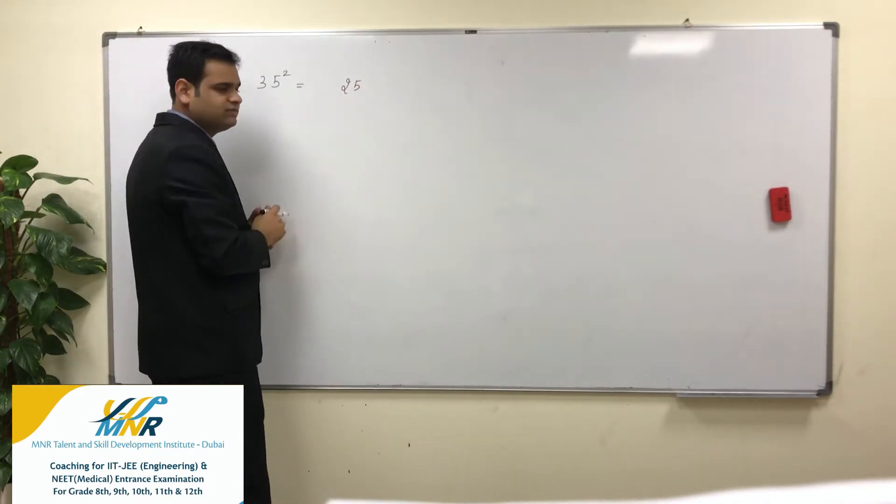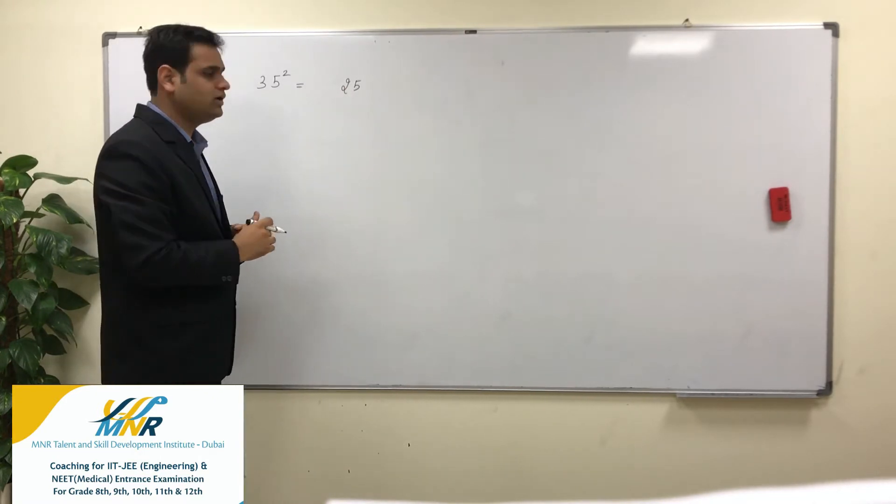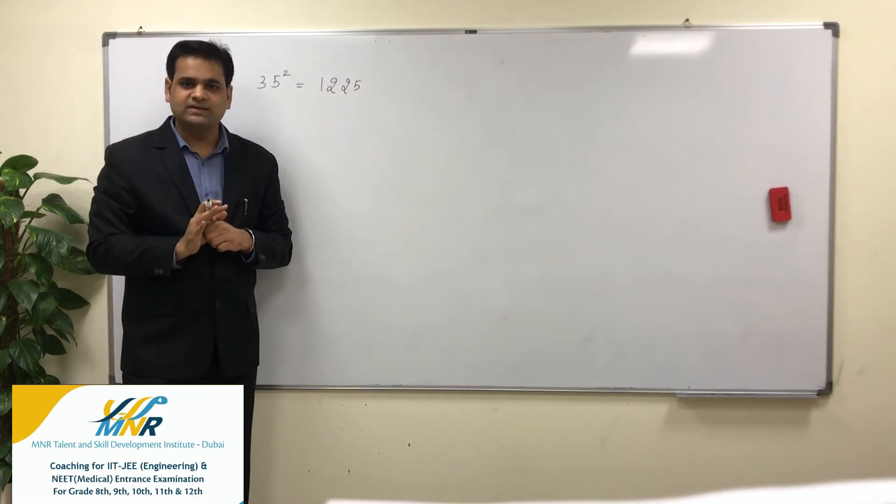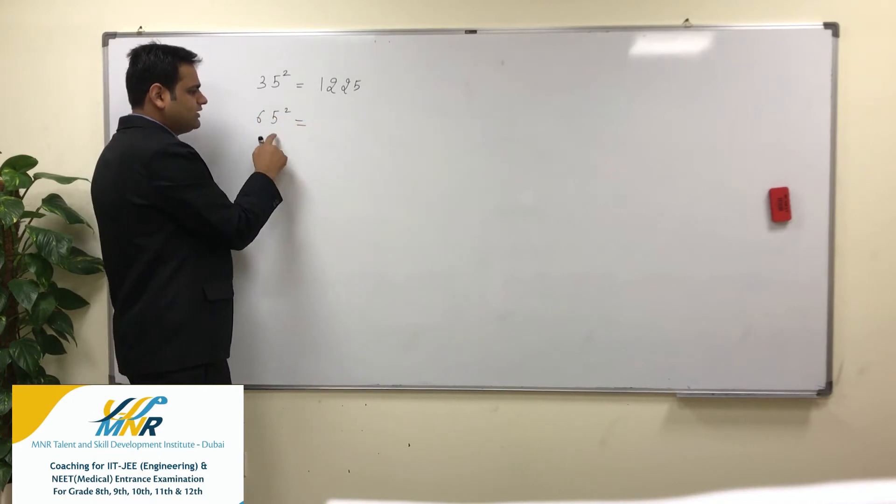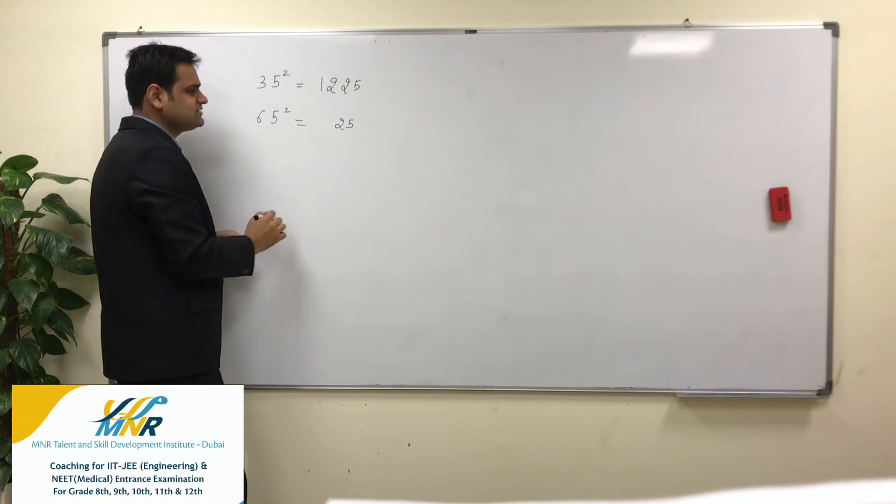What is 5 square? 25. What is the next number of 3? 4. 3 into 4 is 12. That's it, that's my answer: 1225. Let's pick one more example. 65 square. What is 5 square? 25. What comes after 6? 7. 6 into 7...